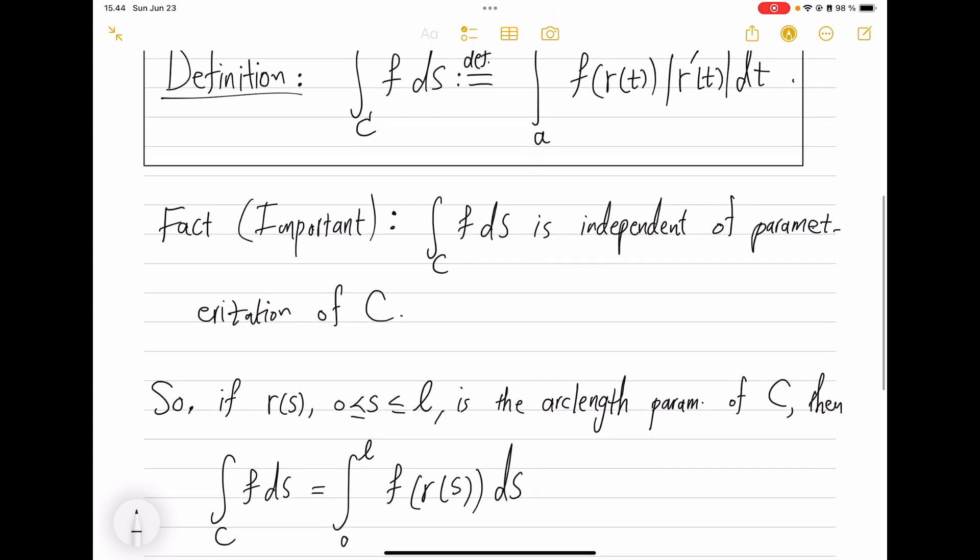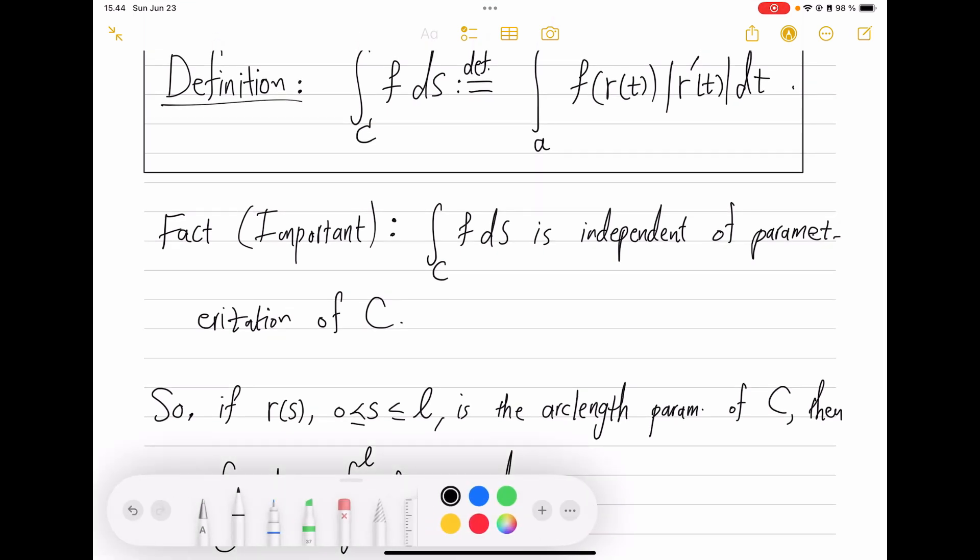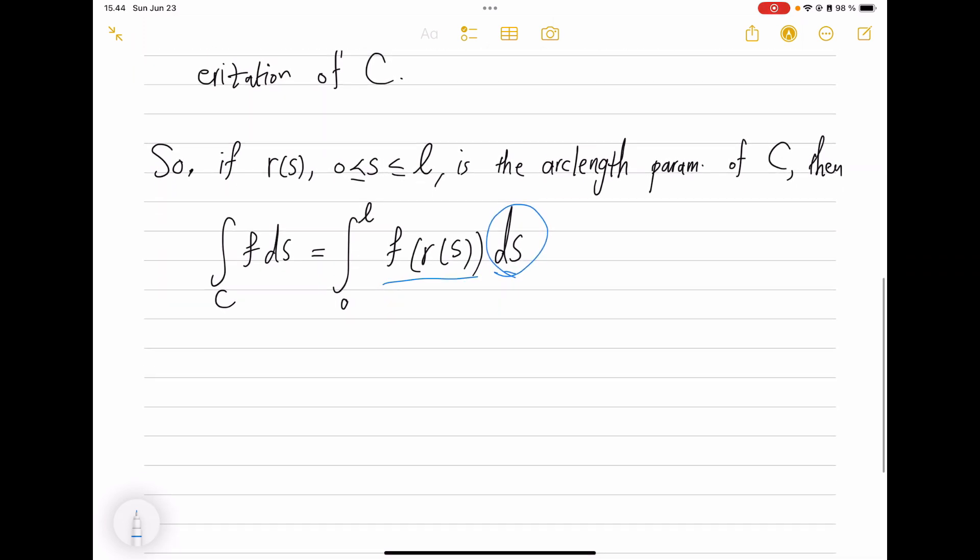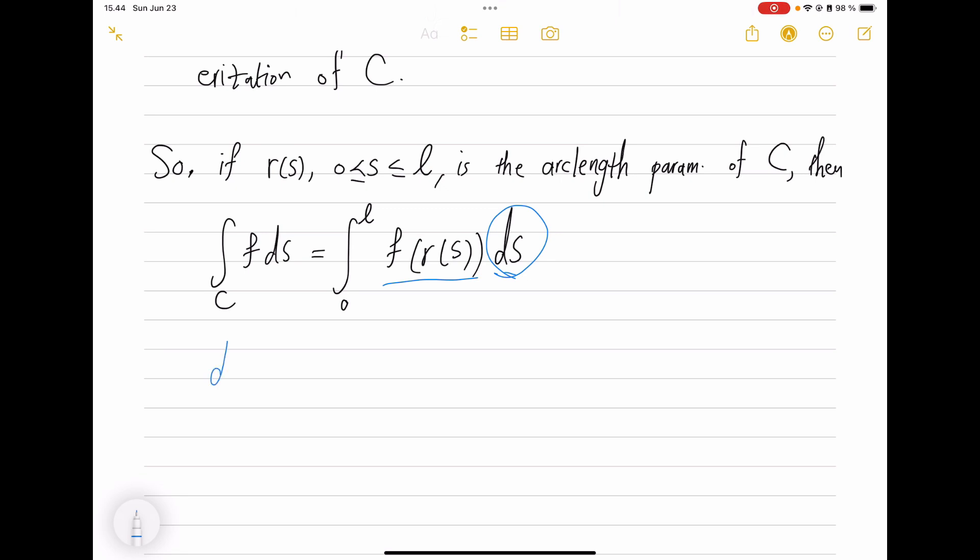Then the integral over C of f ds becomes the integral from 0 to L of f evaluated at the point r(s), |r'(s)|ds. But the thing about arc length parameterization is that |r'(s)| is just one, so that becomes only ds. I'll compare these two formulas.